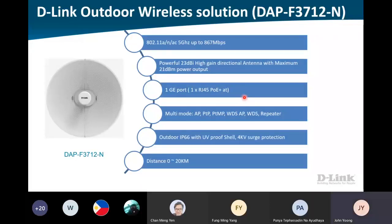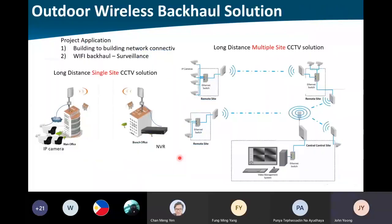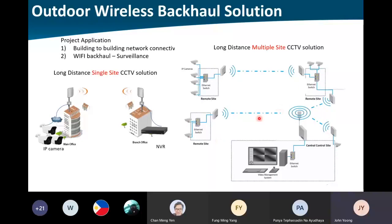And lastly, our DAP-3712 - 867Mbps, high antenna at 23 DBI, only 1GE port, supports up to 20 kilometers. So this is the backhaul solution - we have the site-to-site, meaning PTP, or multiple-site solution where you can set up P2P for some areas and PTMP for others.